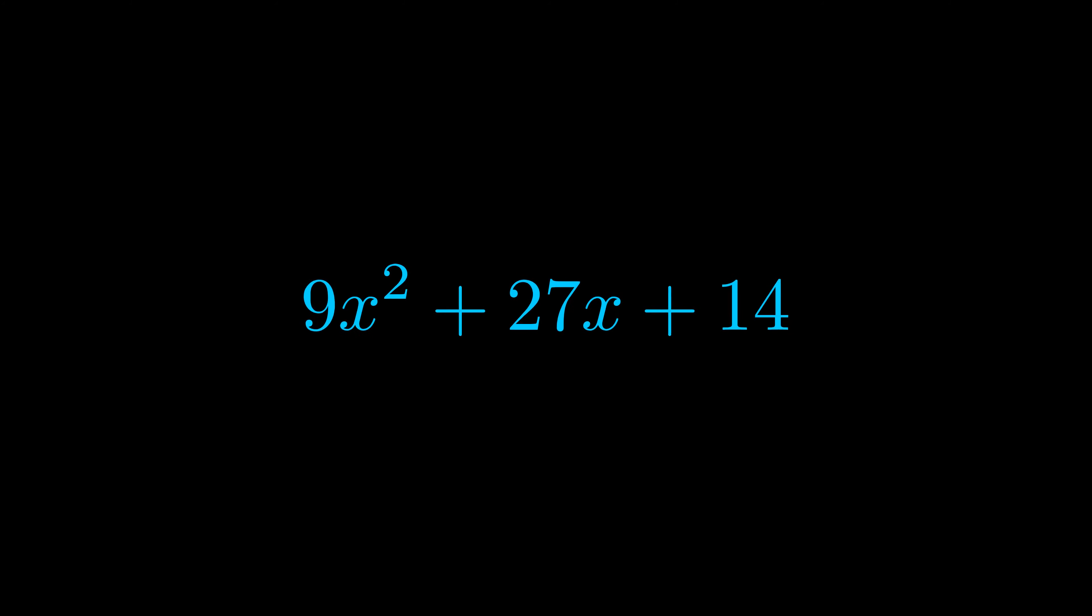Step two is to try to find all of the pairs which multiply to this number. Now turns out you don't really need to find all of them but go ahead and write down as many numbers as you can that multiply to the magenta value for now.